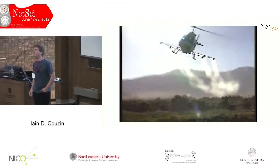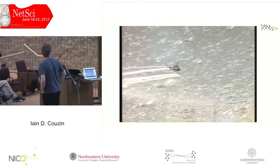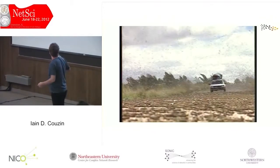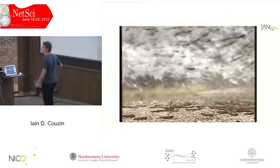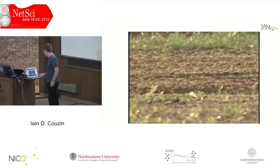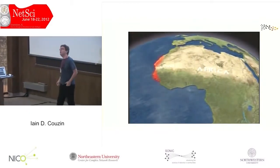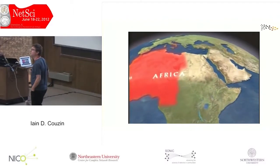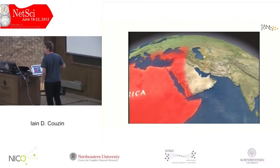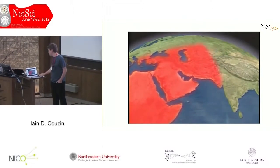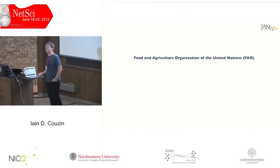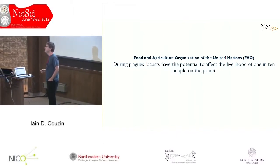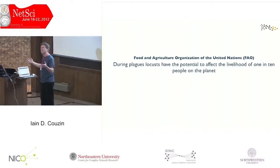These are locusts — something we're very familiar with. A biblical plague. These locusts have a huge impact on the livelihood of people. I do my field research in Mauritania, in West Africa. I'm showing you the distribution of one species, the desert locust, which can invade up to one-fifth of the Earth's land surface during plague years. The Food and Agriculture Organization of the UN estimates that they influence the livelihood of one in ten people on the planet. It's hard to think of a greater impact than that.